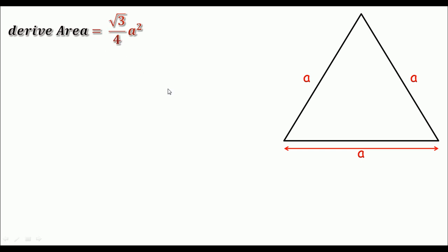To derive this formula we turn this equilateral triangle into two right-angled triangles. This perpendicular line divides the triangle into two right-angled triangles like triangle 1 and triangle 2. Also this line divides the base of this triangle like a by 2 and a by 2.